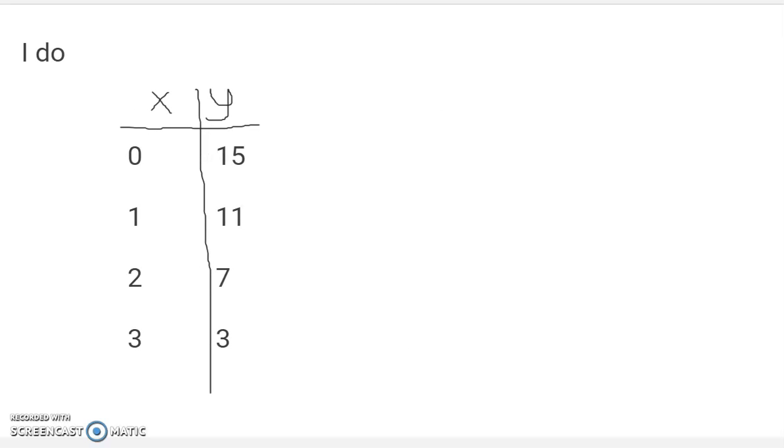Same thing goes when you have ordered pairs instead of a graph. Here, each time x goes up by 1, y goes down by 4. Each time x goes up by 1, y goes down by 4. X goes up by 1, y decreases by 4.